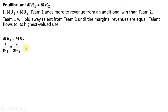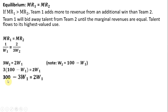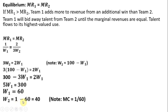Setting that equilibrium condition up and substituting in what our marginal revenues were from the first slide, and simplifying further — multiplying through by W₁ and multiplying through by W₂ — we get this result. We note that team 2's winning percentage is 100 minus team 1's winning percentage, so making that substitution on the left-hand side and gathering the W terms, team 1 will win 60% of its games. Team 2 will win 1 minus team 1's winning percentage, or 40% of its games. Those are our equilibrium winning percentages.